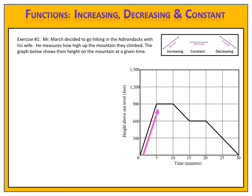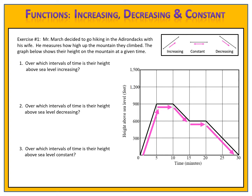Here's the graph that Mr. March created. On the x-axis is the amount of time since they left, and the y-axis shows their height in feet. The graph originally is increasing, then the graph becomes constant, then the graph is decreasing, then constant again, and finally the graph decreases to the end. Let's answer some questions about this graph. Question number one: over which intervals of time is their height above sea level increasing? The graph is increasing in this section here.